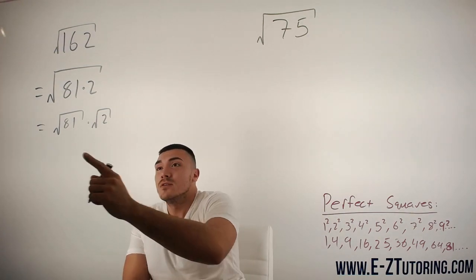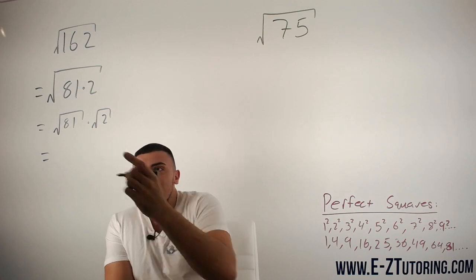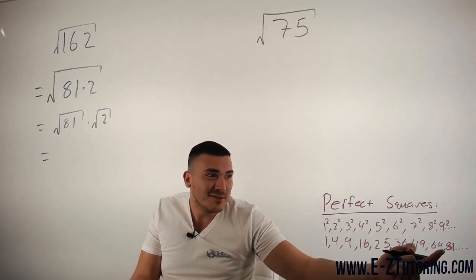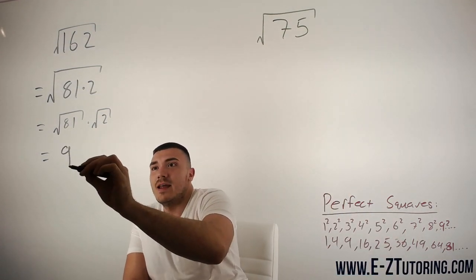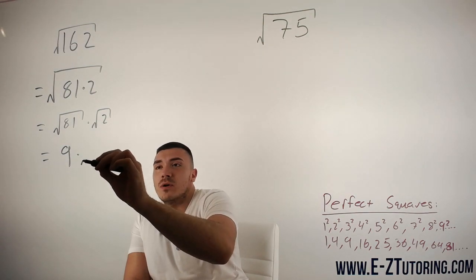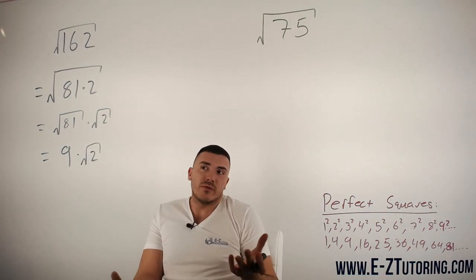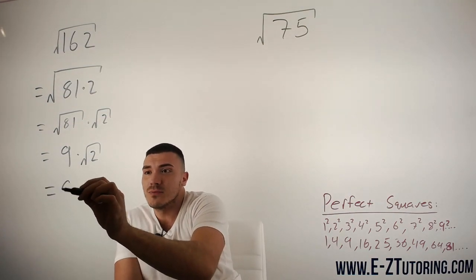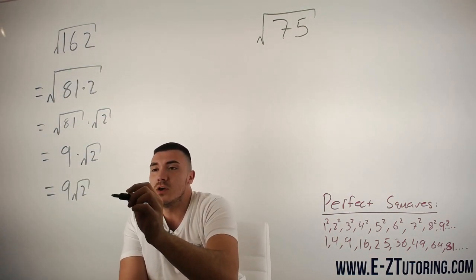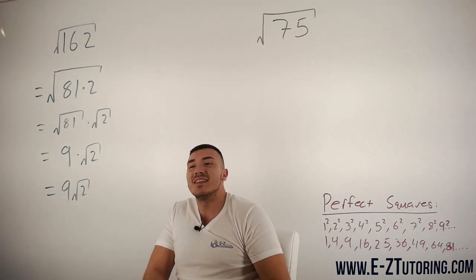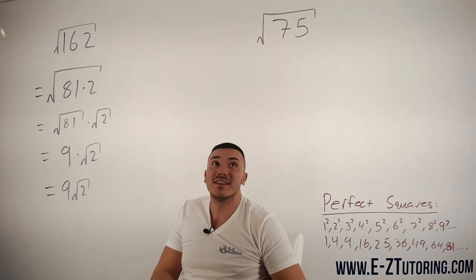All right, so now that we covered that, now we know that the square root of 81 is just 9. 9 times square root of 2. Square root of 2 is as simplified as it gets. So you just write this as 9 root 2. And that right there is the simplified form of square root of 162.